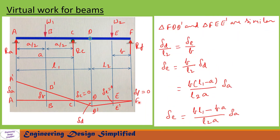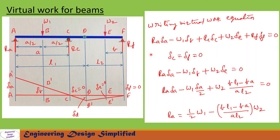From the two similar triangles FE-E' and FD-D' on the second beam: delta_D / L2 = delta_E / b, so delta_E = (b/L2) * delta_D. Substituting delta_D = ((L1 - a)/a) * delta_A, we get delta_E = (b*(L1 - a)) / (L2*a) * delta_A. Now writing the virtual work equation: Ra*delta_A - W1*delta_B + Rc*delta_C - W2*delta_E + Rf*delta_F = 0. Since delta_C and delta_F equal zero, substituting delta_B and delta_E in terms of delta_A and simplifying gives the reaction at Ra.